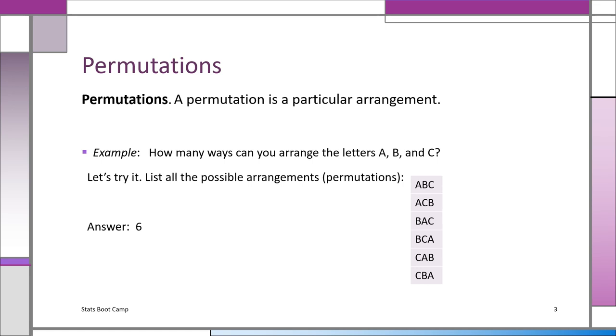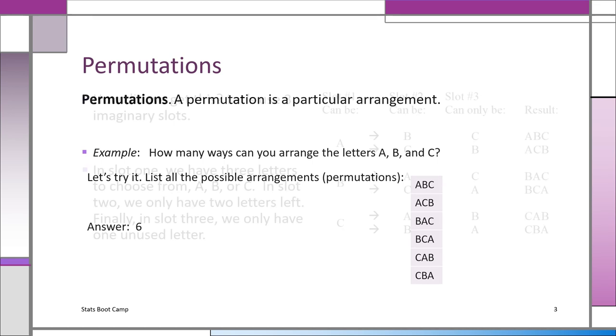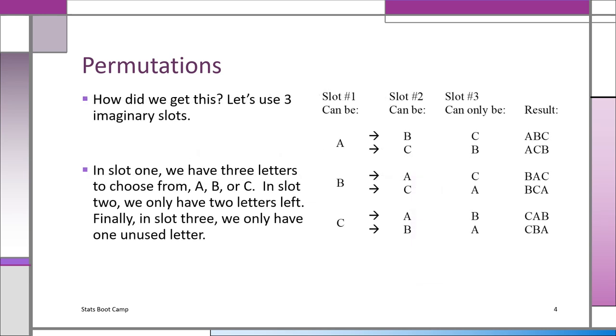So you really have six ways to arrange the letters A, B, C. Using a calculator, you'll see it'll be three permutation three. Now we know three permutation three is six.